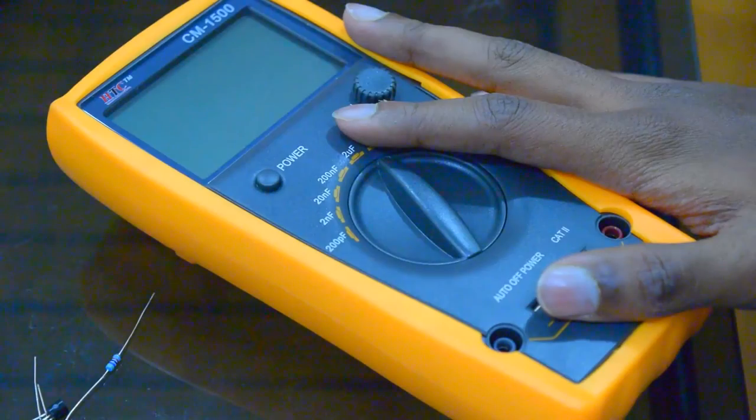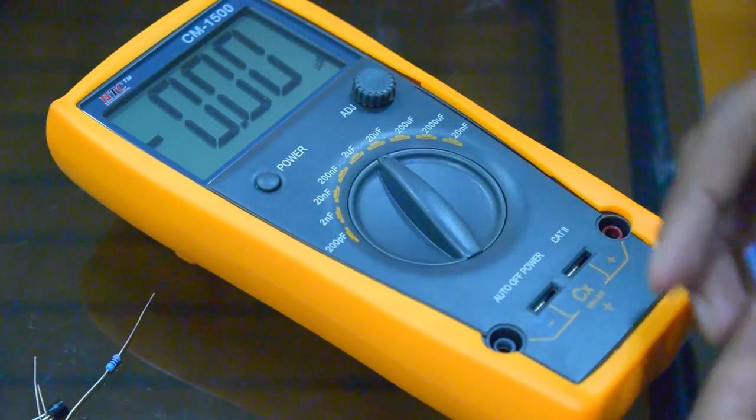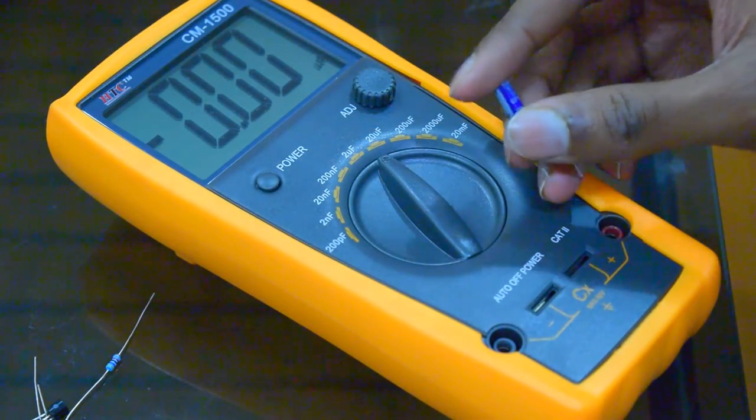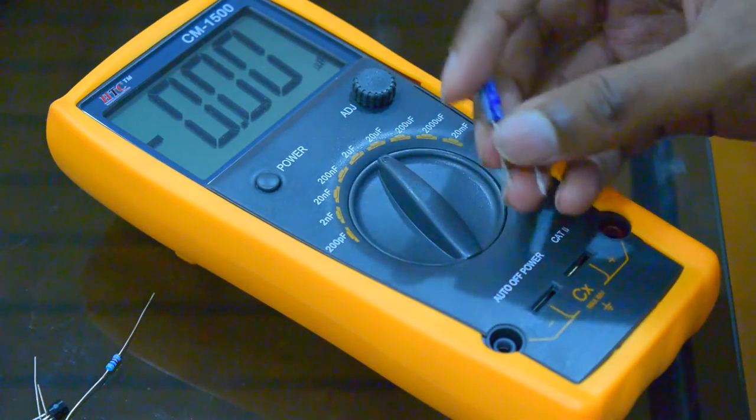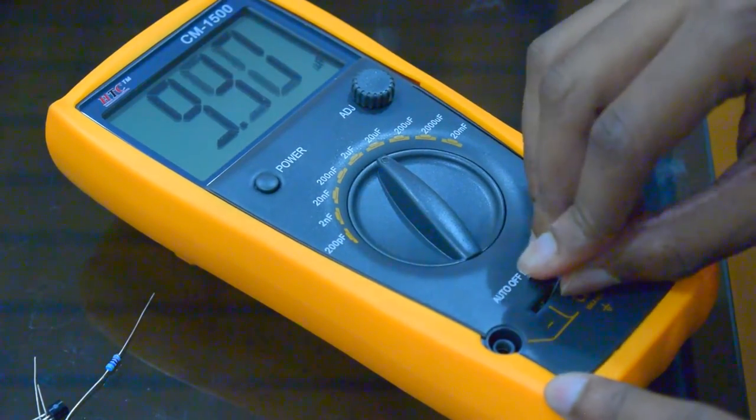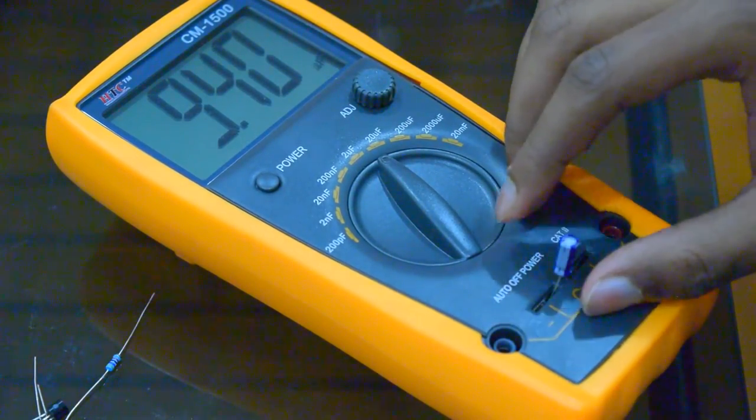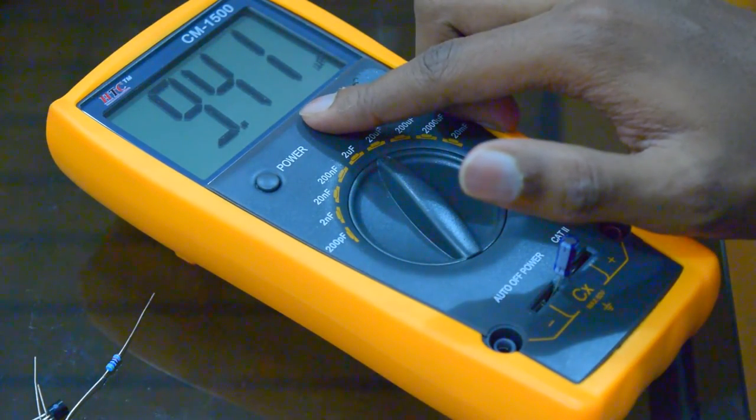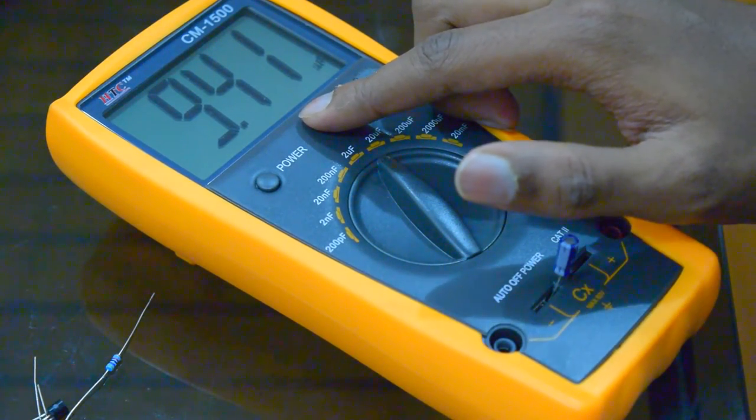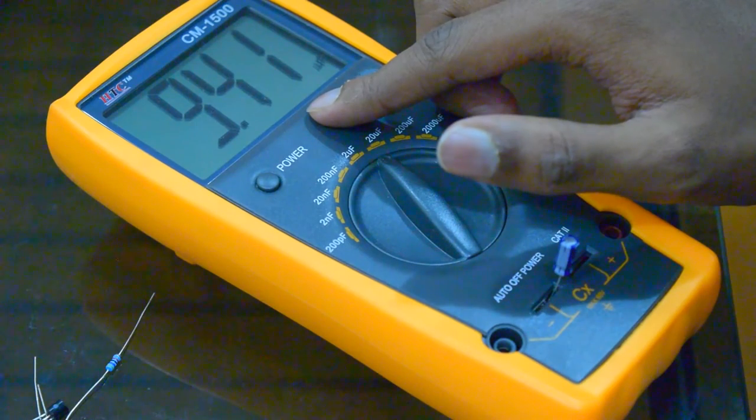Some stand-alone meters like this capacitance meter gives more accurate results. Now I'll measure this 10uF capacitor using this meter. It's showing it as 9.4uF, which is almost 10uF.